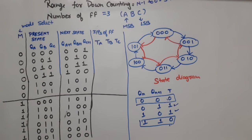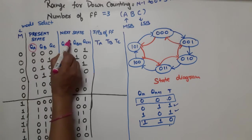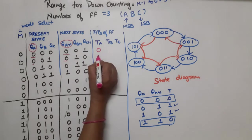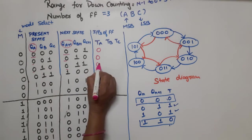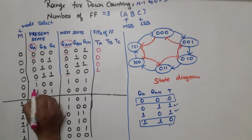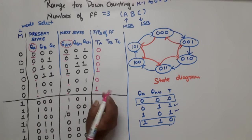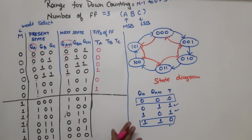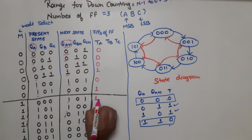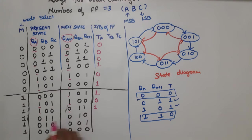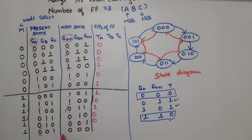To write TA values, we observe QA and QA+1. Going through each row: 0→0, no change means 0; 0→0, no change means 0; 0→0, no change means 0; 0→1, toggling means 1; then for down counting: 1→0 change means 1; 1→1, no change means 0; 1→0, change means 1; 0→0, no change means 0; and remaining rows are 0.